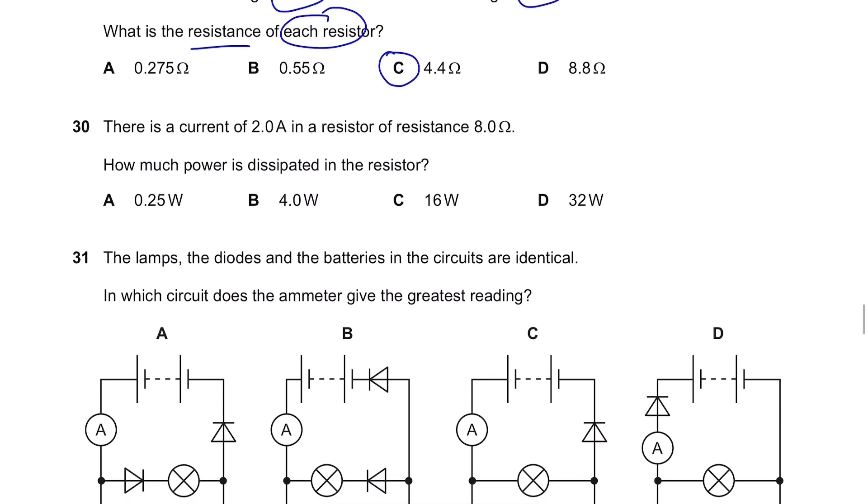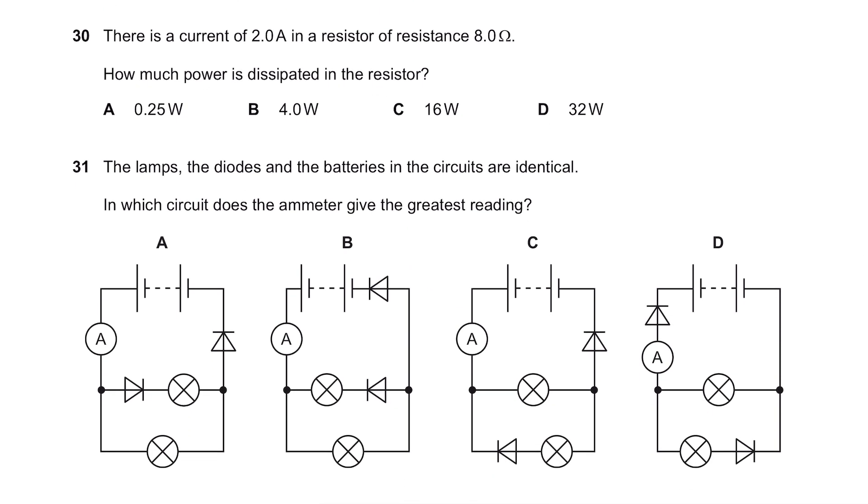Question 30. There is a current of 2 amperes in a resistor of resistance 8 ohms. How much power is dissipated in the resistor? Power equals voltage times the current, which is also square of current times the resistor. So, just do your calculations, 2 squared times 8 equals 32W.